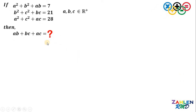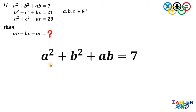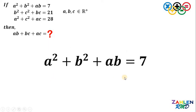Our goal in this question is to get the numerical value of ab plus bc plus ac, given these three equations. We also need to consider that a, b, and c are in the set of positive real numbers. Now, how are we going to answer this question? The first thing to do is to take the first equation: a squared plus b squared plus ab equals 7, and rearrange this term a little bit.